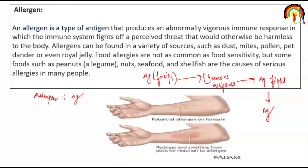Food allergies are not as common as food sensitivity. Kabhi kabhi jaise ice cream ya koi other food item khaate hain, to food sensitivity ho jati hai — that is very common. But food allergies are not as common as food sensitivity. But some foods such as peanut, nuts, seafood and shellfish are the cause of serious allergies in many people. Yeh foods mild to severe food allergies cause karva sakti hain.